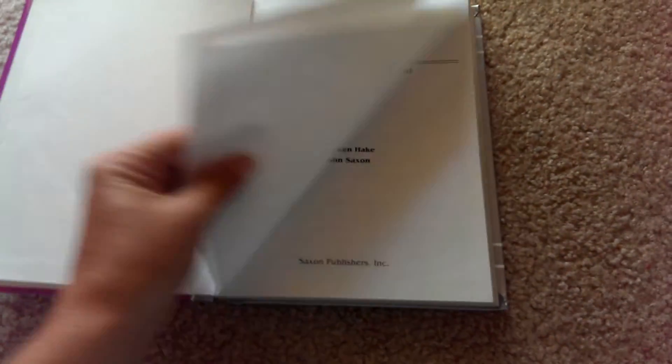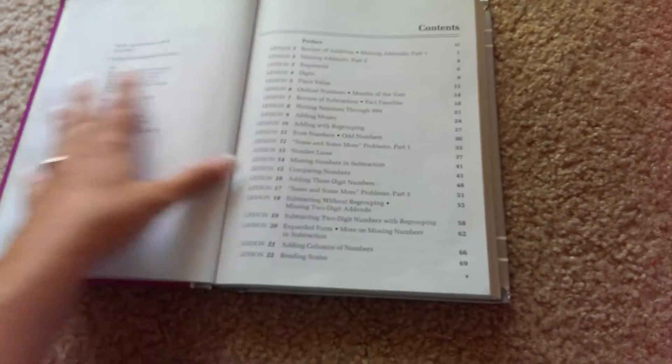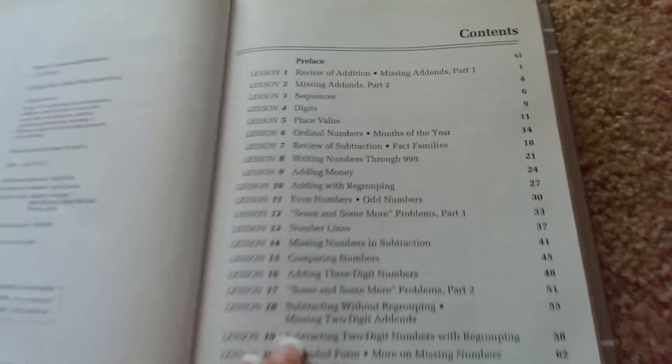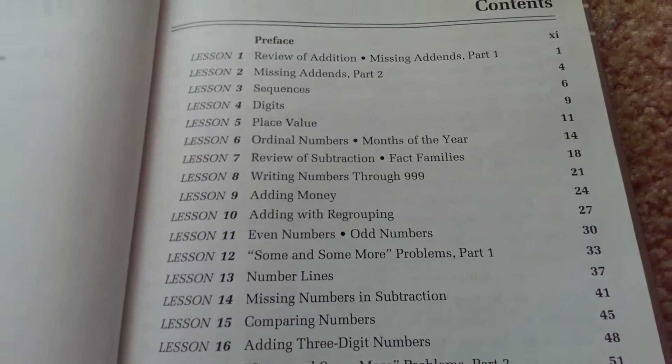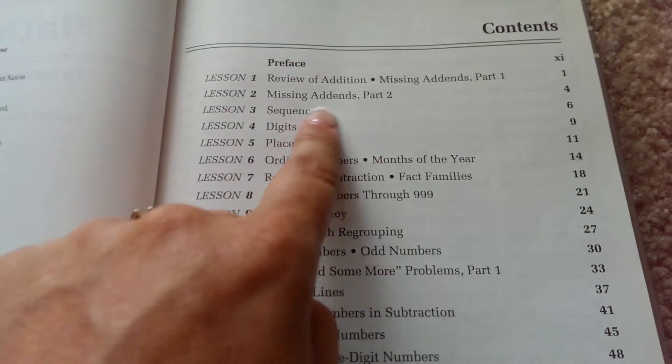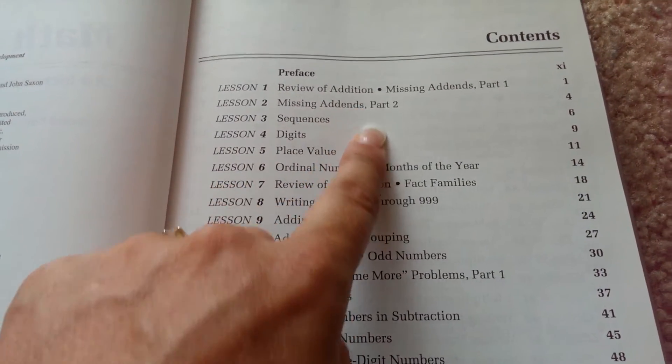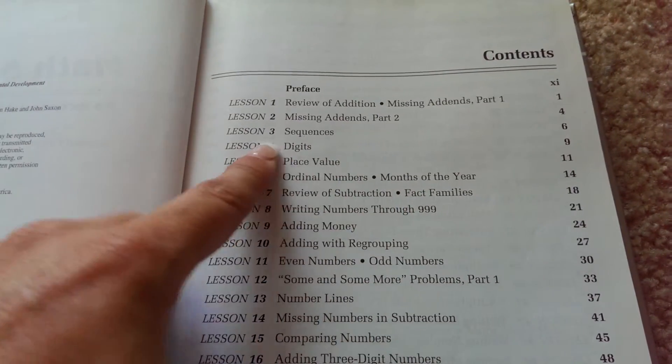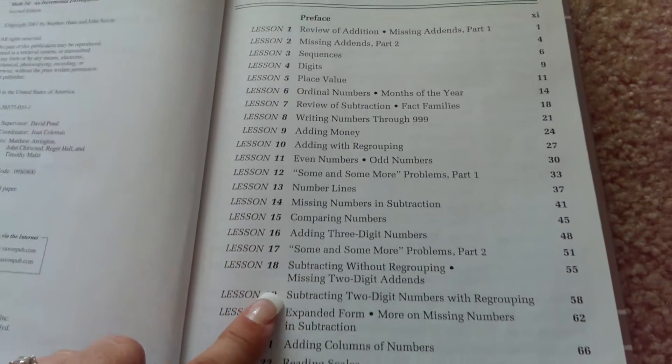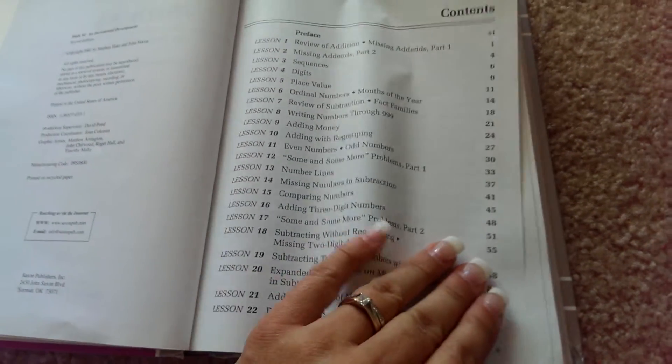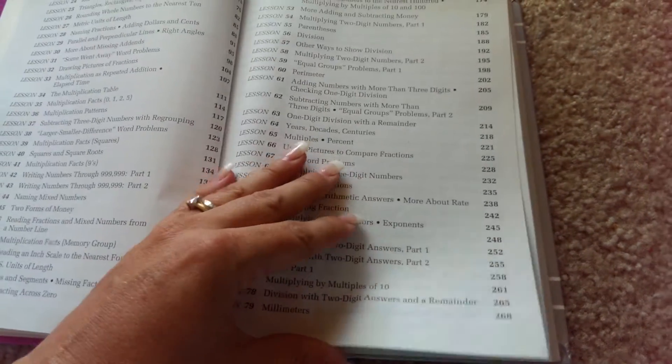I bought this from eBay for $4. I do notice that what it has from the third edition are the extra bullet points. There are no investigations throughout this book. It's only the lessons.